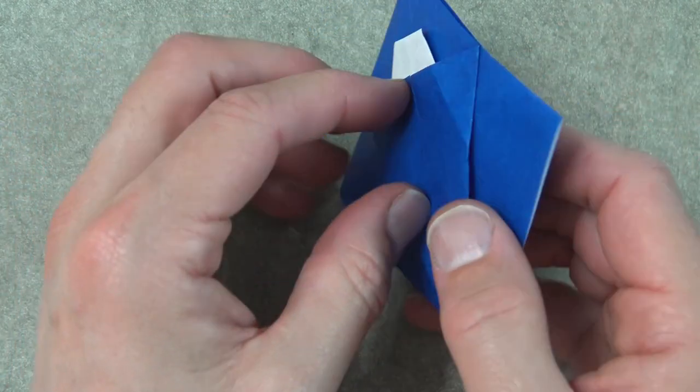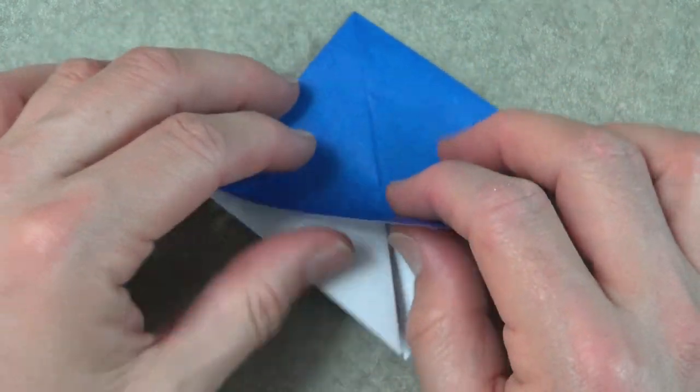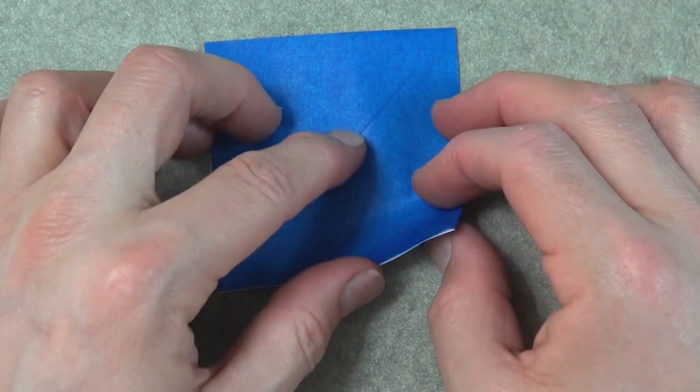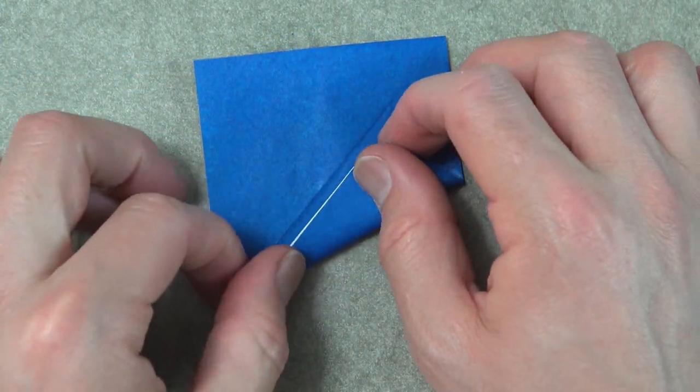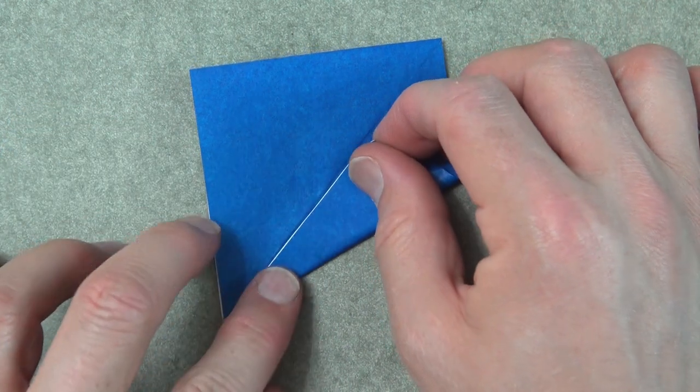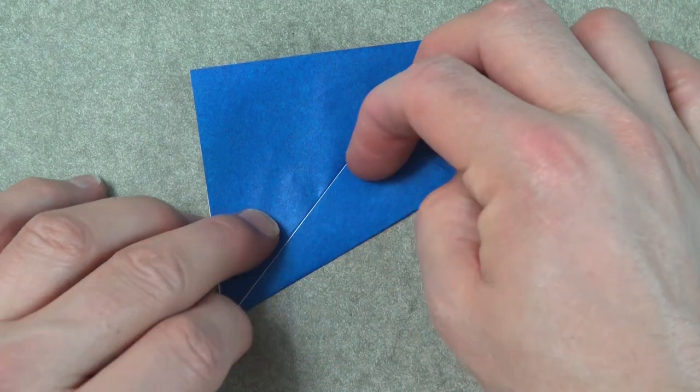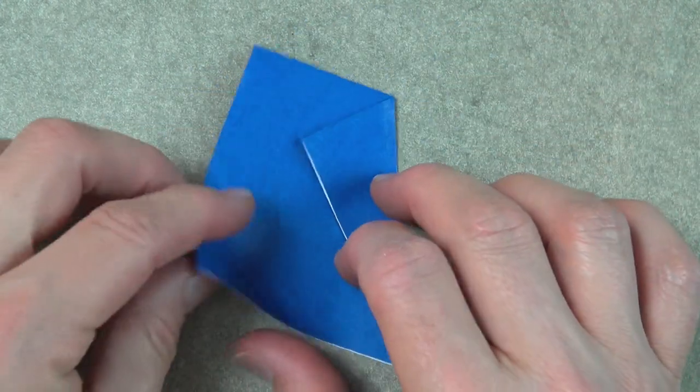All right. Now turn over and the open side is nearest to you. Fold this flap to this crease and fold exactly to the crease. And repeat.